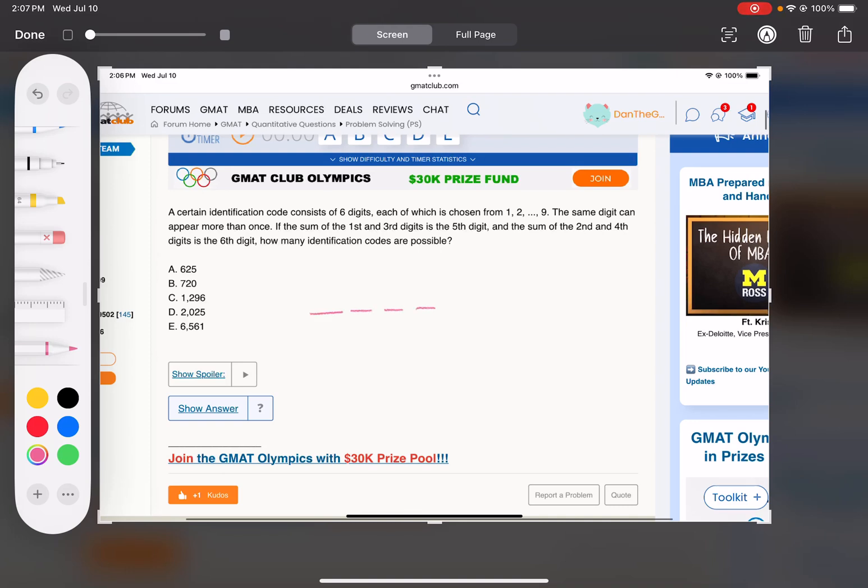Okay, tricky one here. We've got six digits. The first and third have to add up to the fifth. There's really just one outcome for the fifth digit—it's just the sum of the first and third. You can't simultaneously have multiple options there. This is just whatever the sum of the first and third is. And the second and fourth add up to the sixth. There's only one option in the sixth place as well.